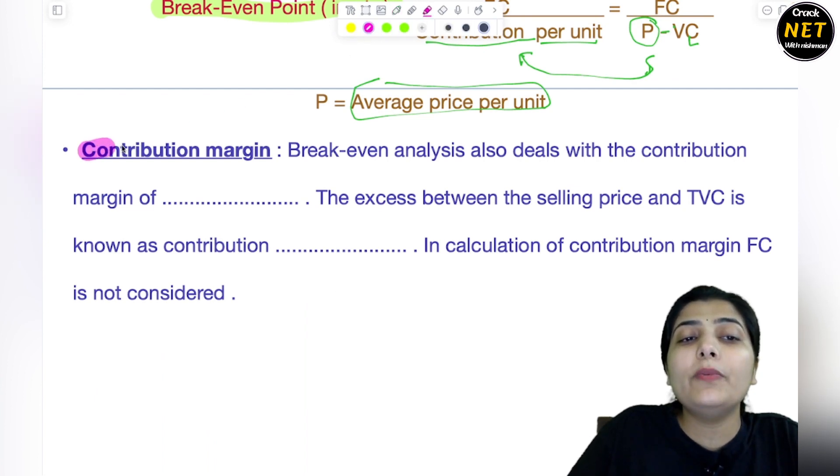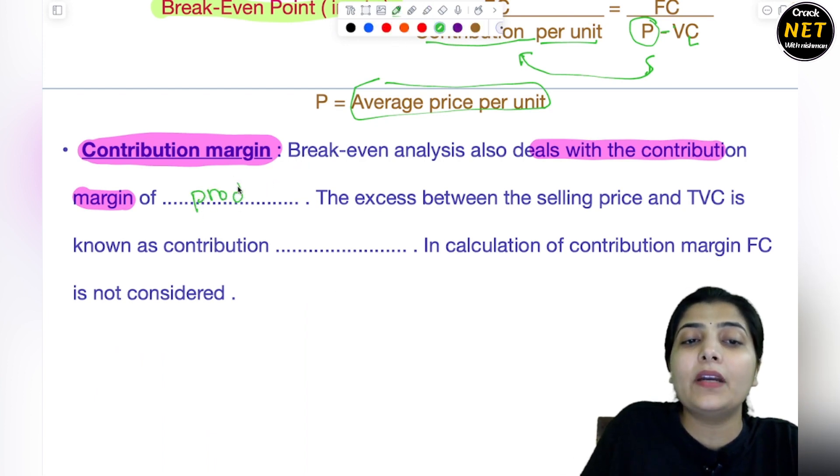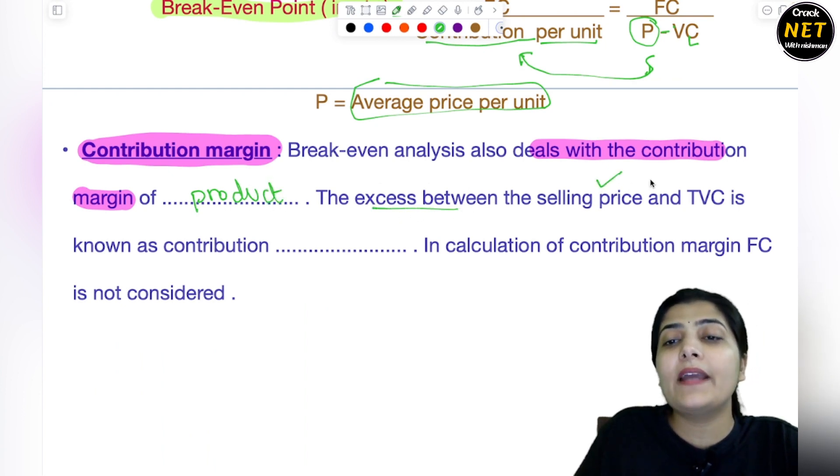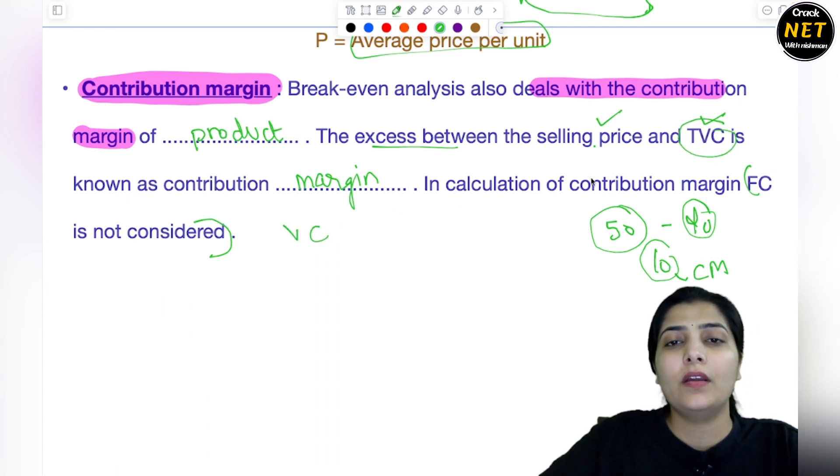Now coming to the next topic, contribution margin. You should know about contribution margin in break-even analysis. Break-even analysis deals with the contribution margin - how much a product contributes. It is the excess between the selling price and total variable cost. If you deduct total variable cost from selling price, that is known as contribution margin. Suppose the selling price of a chair is 50 rupees and variable cost is 40 rupees, then 10 rupees is your contribution margin. In calculation of contribution margin, fixed cost is not considered. Only variable cost is used - total variable cost, no fixed cost.